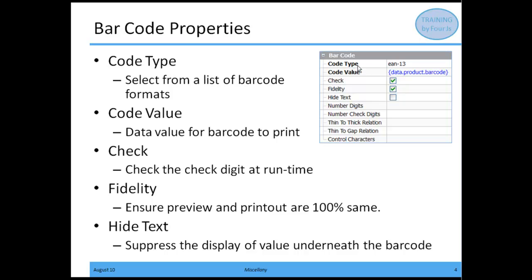If you need a barcode format that's not in the code type property list, please contact your local support so that we can add it to the product. We also have a code value. This is the data for the barcode to print — the information is coming across as a data item from your data schema, and that lets us know how to format and display the barcode that you selected.